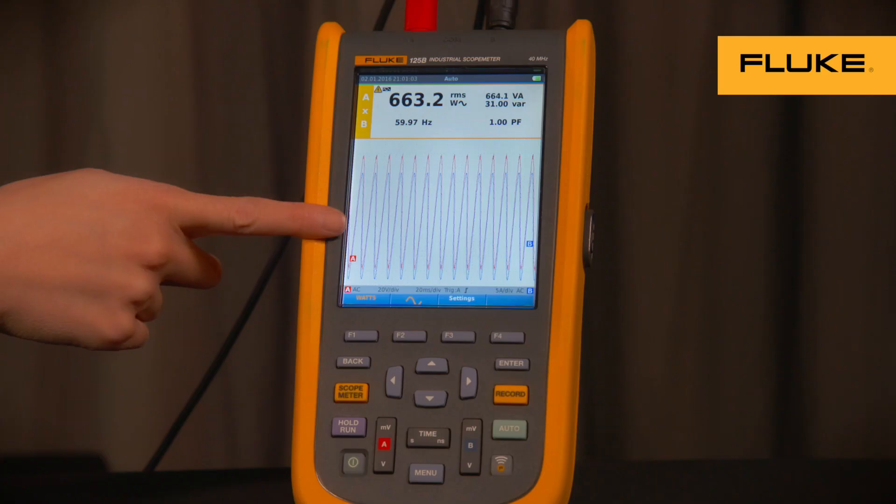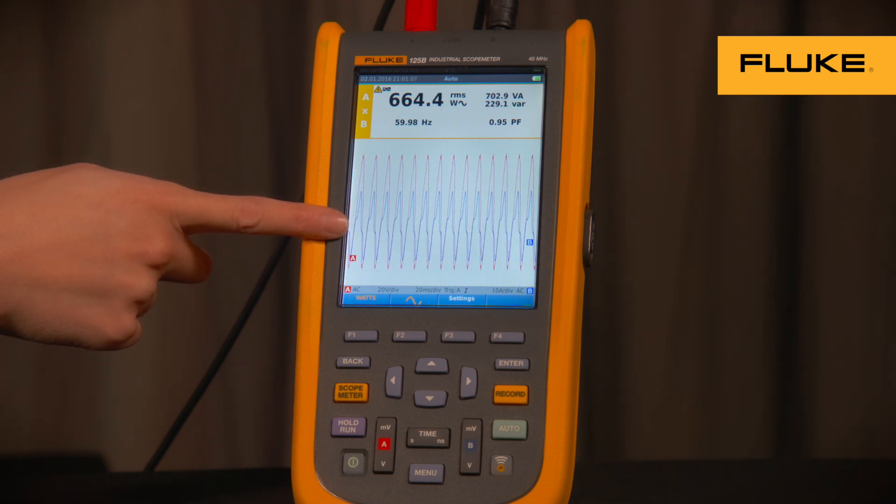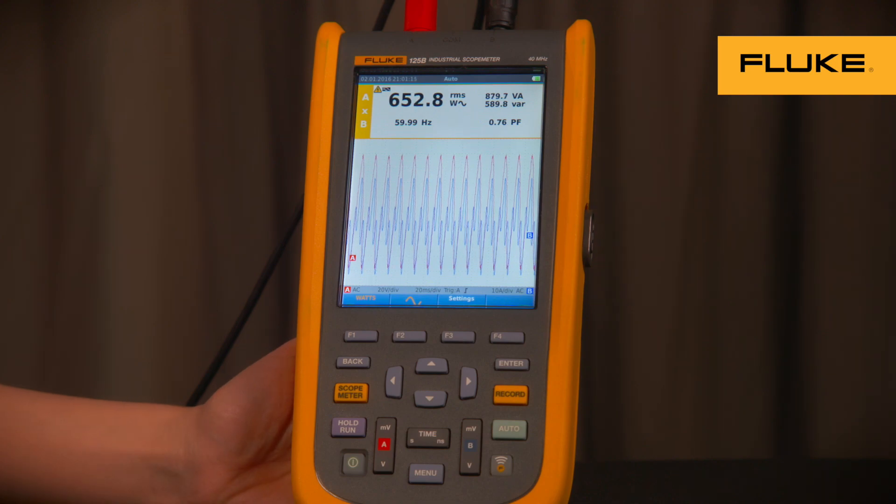If we add a third harmonic distortion on the current, notice the blue sine wave, which is our current measurement, experience distortion. And at the same time, you can see your power factor and all your other power parameters change.